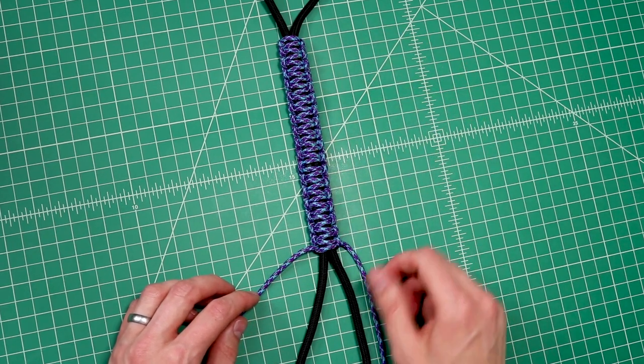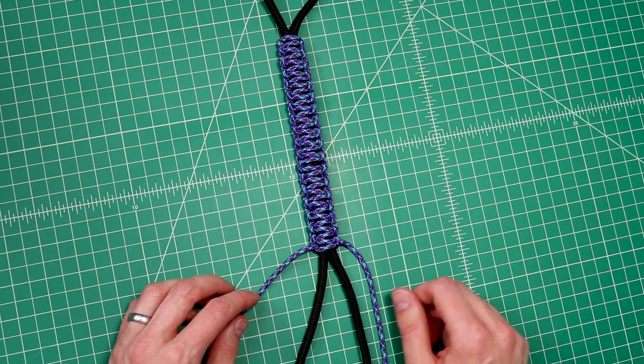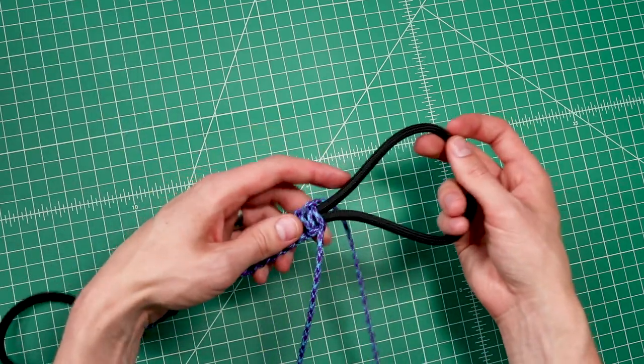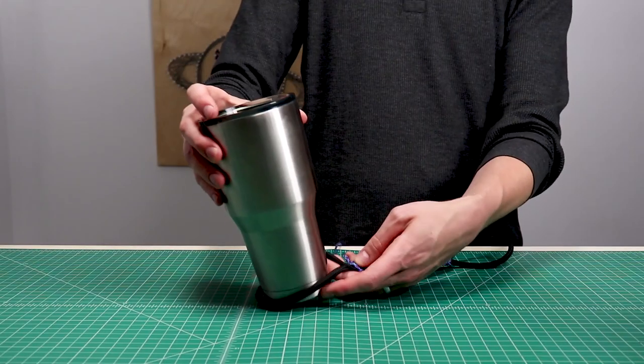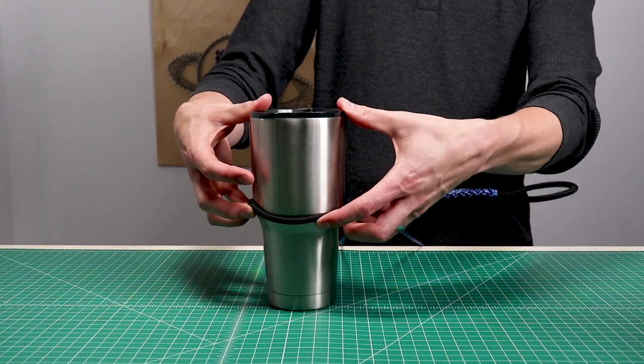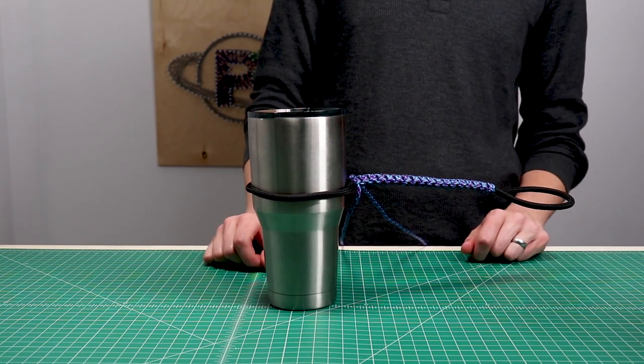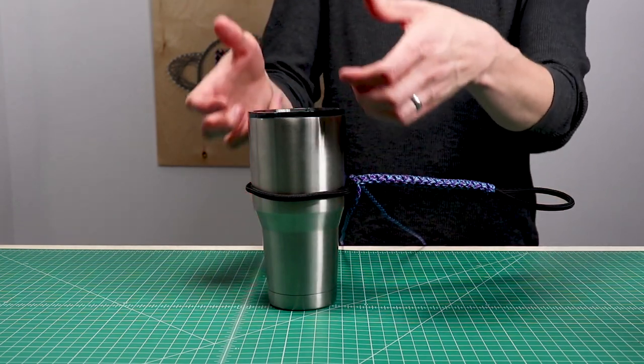Again, once we do that King Cobra weave, it's not really going to matter. So before you go any further, test it out on your mug to make sure that it fits just over that hump, so that it'll friction fit the rest of the way.